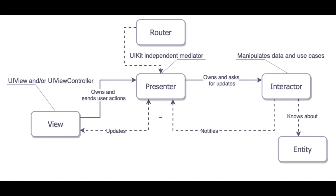In the screen, if you see the VIPER model — V is for View, I is for Interactor, P is for Presenter, E is for Entity, and R is for Router.